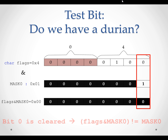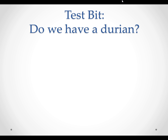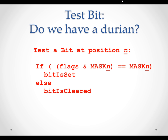From this example, we can see that when bit 0 is cleared, the result of flags bitwise AND mask 0 is not the same as mask 0. Conclusion: to test whether a bit at position N is set or not, we can bitwise AND the bit flags with Mask N. If the result is the same as Mask N, the bit is set; otherwise, the bit is cleared.